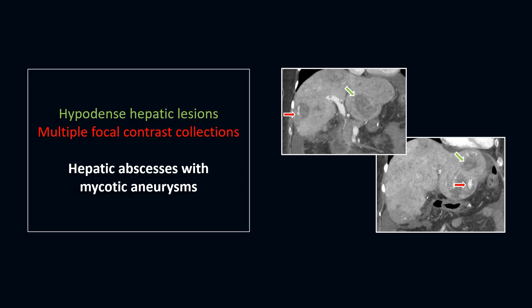Infection in the liver occurs by five routes: biliary due to ascending cholangitis; portal venous due to bacteremia from intra-abdominal sepsis; arterial due to septicemia; local extension from neighboring tissues; and traumatic due to blunt and penetrating injuries. The CT appearance is round or irregular hyperdense masses with a peripheral enhancing capsule.